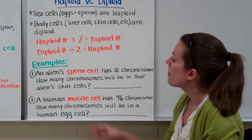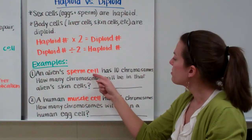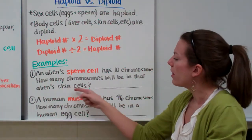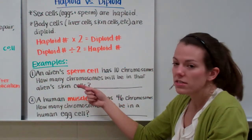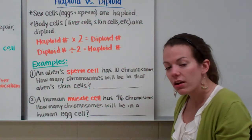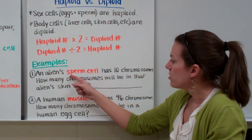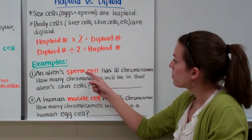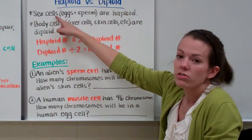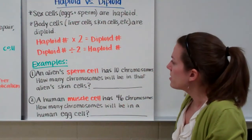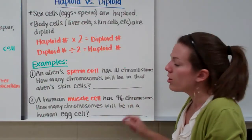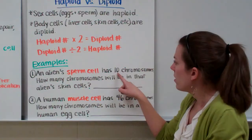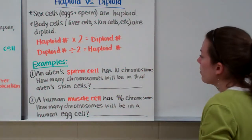Let's do some examples. If an alien sperm cell has ten chromosomes, how many chromosomes will be in that alien's skin cells? You have to decide if the cell they gave you was haploid or diploid. Sperm cells are sex cells, so they are haploid. That means we need to multiply by two to figure out how many chromosomes are in a diploid skin cell, because skin cells are diploid. So ten times two equals twenty.